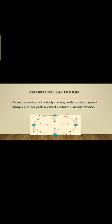The motion of a body moving with constant speed along a circular path is called uniform circular motion. If a body covers the same distance at any point along the circular path, then that type of motion is known as uniform circular motion.